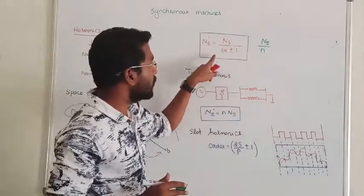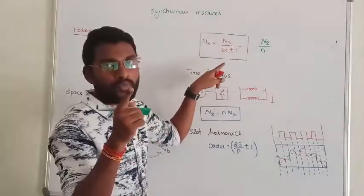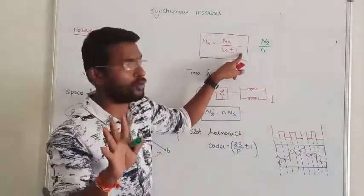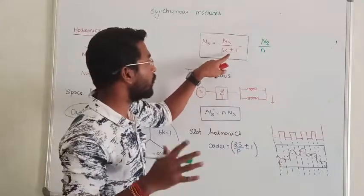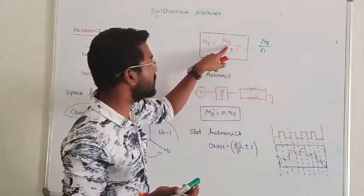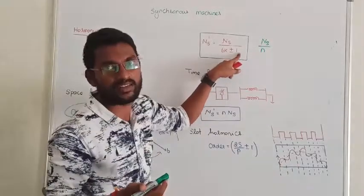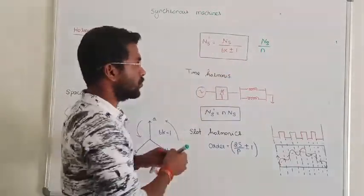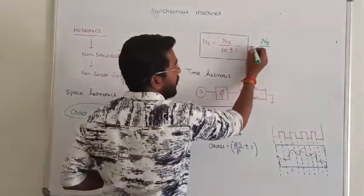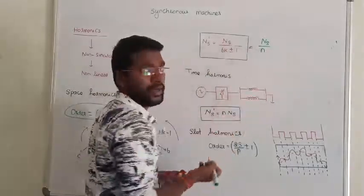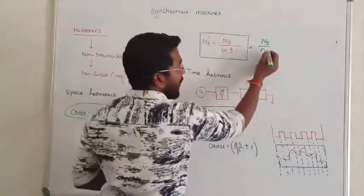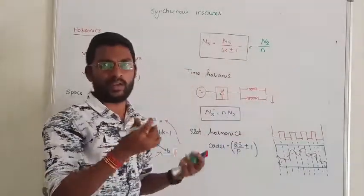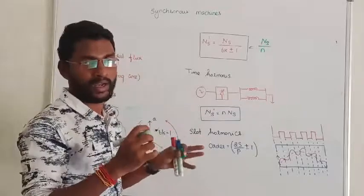The 5th harmonic satisfies 6k minus 1 equals 5, so k equals 1. In general, the new speed formula is Ns by N, where N is the order of the harmonics — whether 5, 7, 9, or whatever order applies.